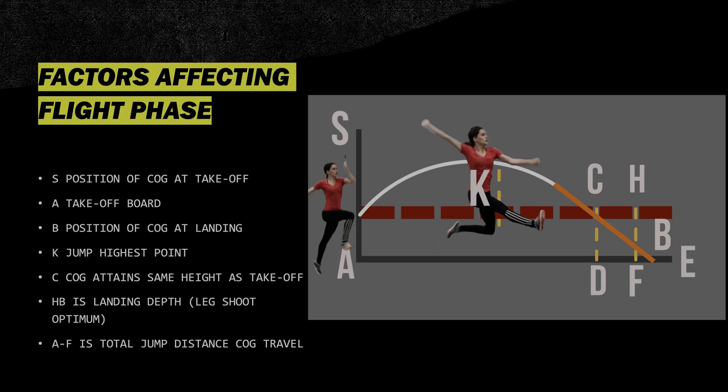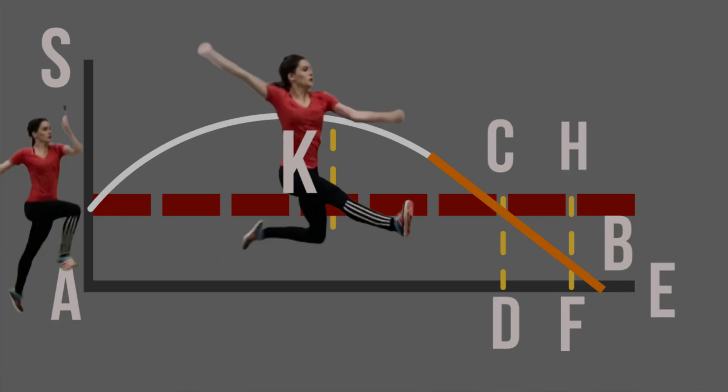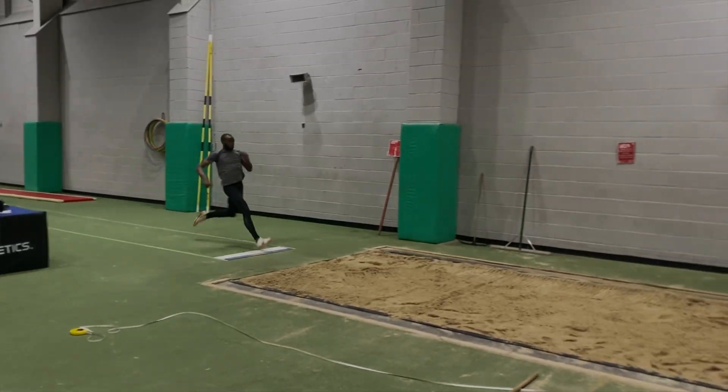This next slide is particularly interesting — it's a graphic I've translated into a more modern computer version showing what happens at the flight phase of the long jump. S is the position of the centre of gravity at takeoff, around hip level. A is the takeoff board. B is the position of the centre of gravity at landing. K is the highest jump point. C is the point at which the centre of gravity returns to the same level as at takeoff. HB is the landing depth, referred to as the leg shoot. A to F is the total jump distance — the distance the centre of gravity travels across the whole flight phase.